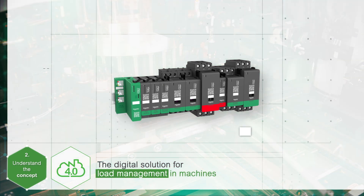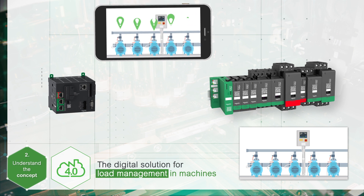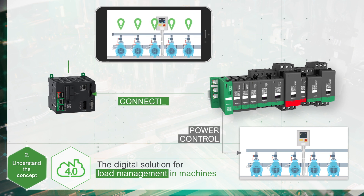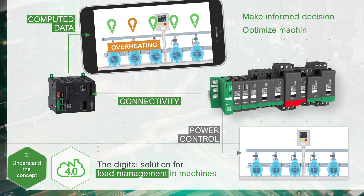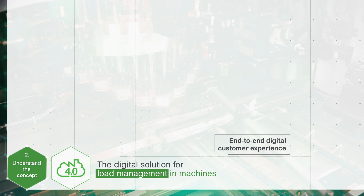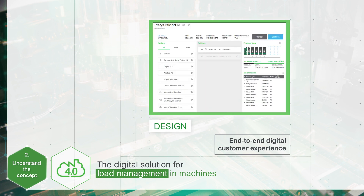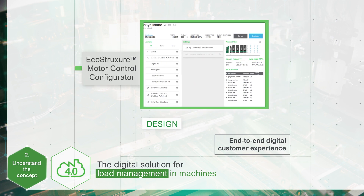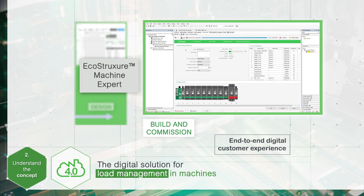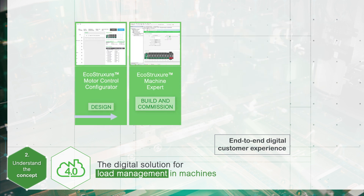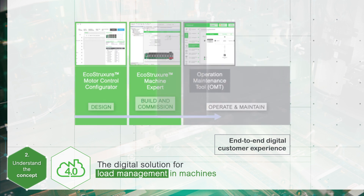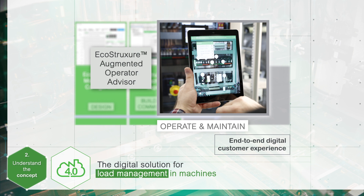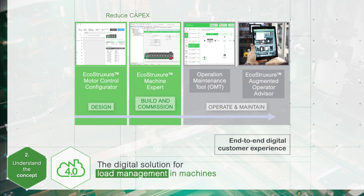Ready for the new age of industrial Internet of Things, it provides power, control, connectivity, and computer data to make informed decisions and optimize machine performance. With an end-to-end user-friendly digital customer experience, EcoStruxure Motor Control Configurator, EcoStruxure Machine Expert, operation and maintenance tool, and EcoStruxure Augmented Operator Advisor help reduce capital expenditures and increase machine availability and efficiency.